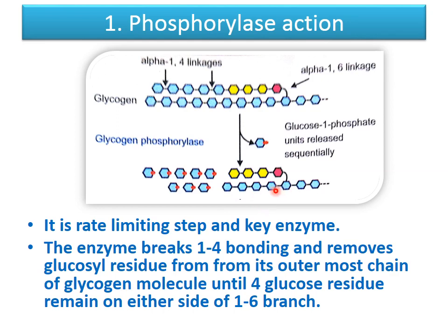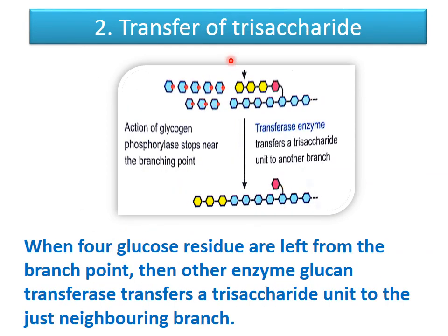In the same way, in each branch, glucose molecules are removed until 4 residues remain. This is the rate-limiting step. Phosphorylase is the key enzyme for stimulating glycogen breakdown, breaking 1,4 bonds and removing all glucose from the outermost chains until 4 glucose residues remain, releasing them as glucose-1-phosphate.